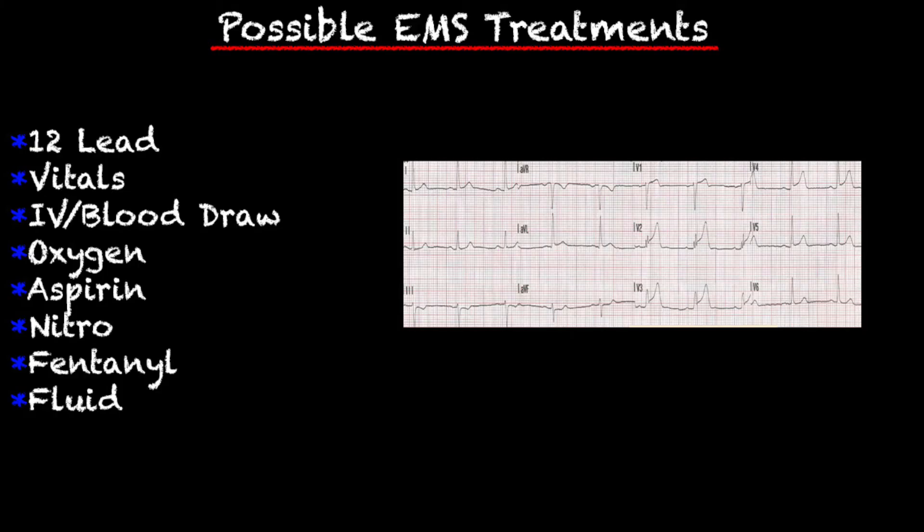Possible EMS treatments — of course always follow your local protocol and stay within your scope of practice — but they can include a 12-lead, gathering vitals, an IV or a blood draw, giving O2 if needed, aspirin, nitro, fentanyl as an analgesic, and fluids if needed. This is not always a treatment during the course of an MI, but you can administer fluid.